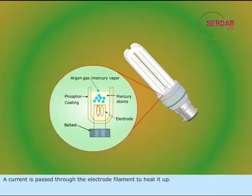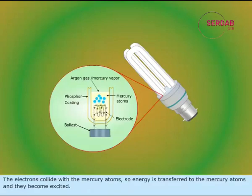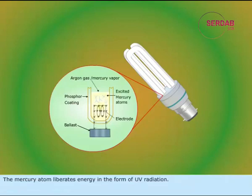A current is passed through the electrode filament to heat it up. This forms low pressure inside the cavity and causes electrons to flow from the hot filament of one electrode and to accelerate along the cavity. The electrons collide with the mercury atoms, so energy is transferred to the mercury atoms and they become excited. The mercury atom then liberates energy in the form of UV radiation.